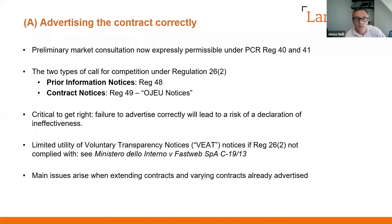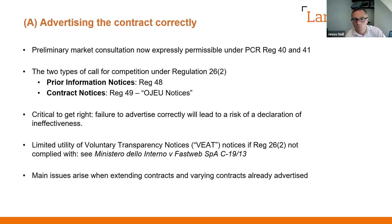Under the 2015 PCRs, a new type of notice came in called the prior information notice (PIN). That's an alternative in certain instances to a contract notice. The use of PINs is available to sub-central contracting authorities — for example, local authorities — if they're using the restricted or competitive dialogue procedures. Effectively, if you issue one of these notices, it allows the mandatory timeframes set out within those procedures to be truncated, so it can save time if a local authority wants to conduct a procurement more swiftly than would otherwise be required under the PCRs.